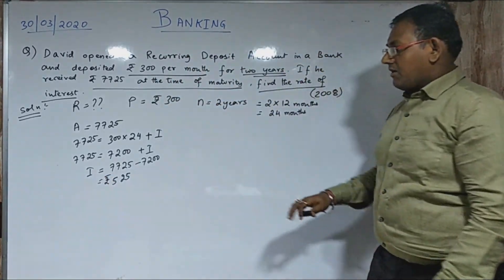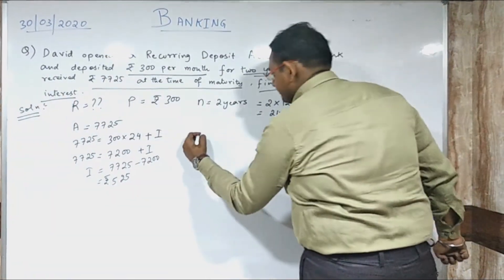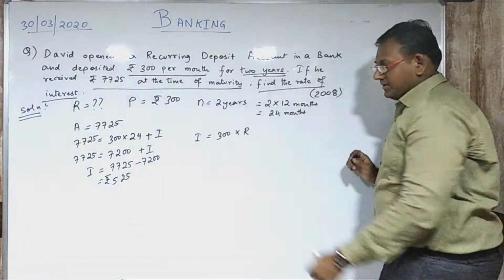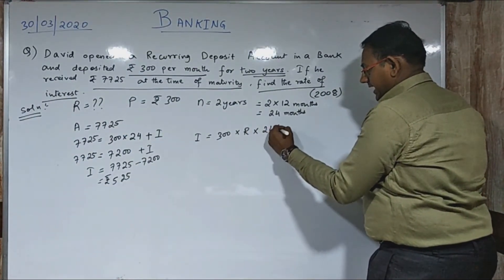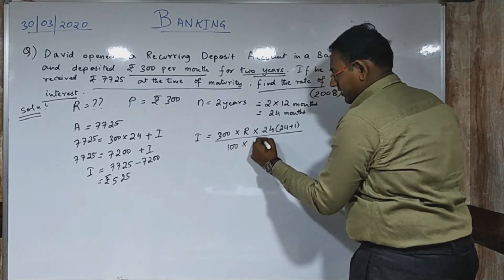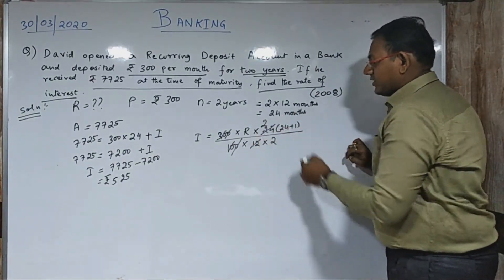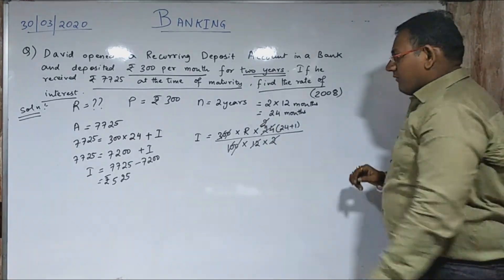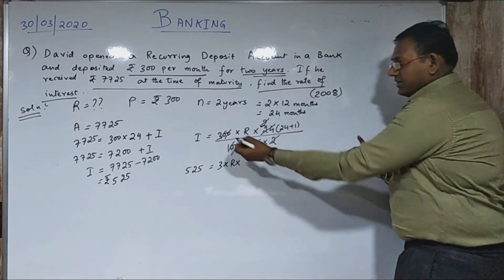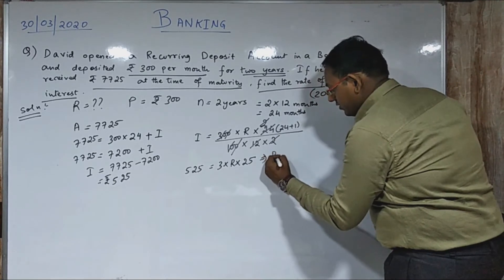This is your interest. Now after getting the interest, apply the formula: Interest equals principal into r into (n+1) divided by 100 into 12 into 2. The 100 cancels, then 24 and 12 cancel to give 2, and that cancels as well. So 525 equals 3 into r into 25, since 24 plus 1 equals 25.